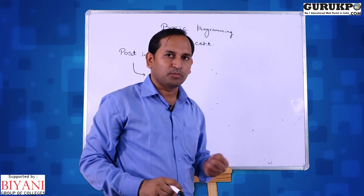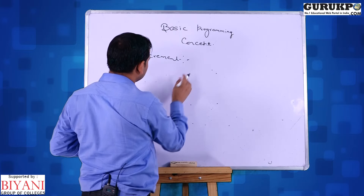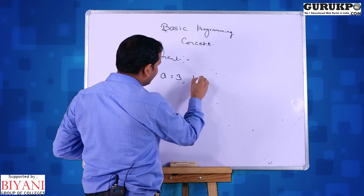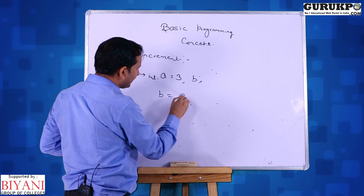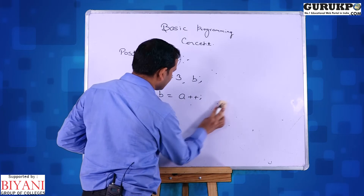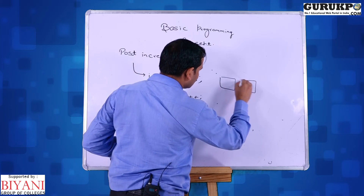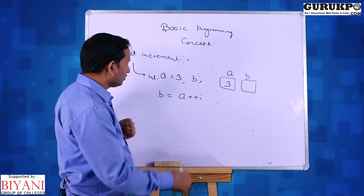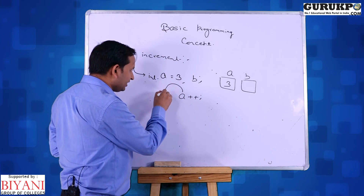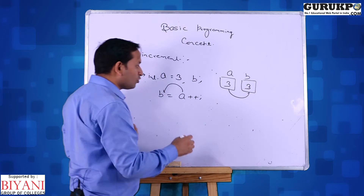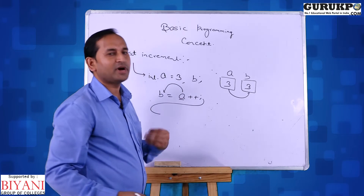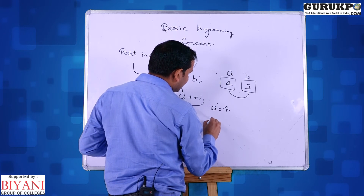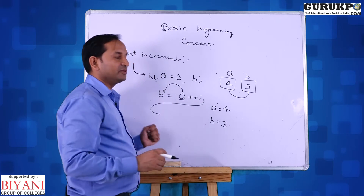Now taking an example of post-increment. Post means after. We have two variables A and B. Value of A is 3. With A++, post-increment is performed after the completion of the statement. So first, the value of A is stored into B — value of B is now 3. When control goes to the next line, value of A is incremented by 1, so A becomes 4. Output: A is 4, B is 3. This is the primary difference between pre-increment and post-increment.